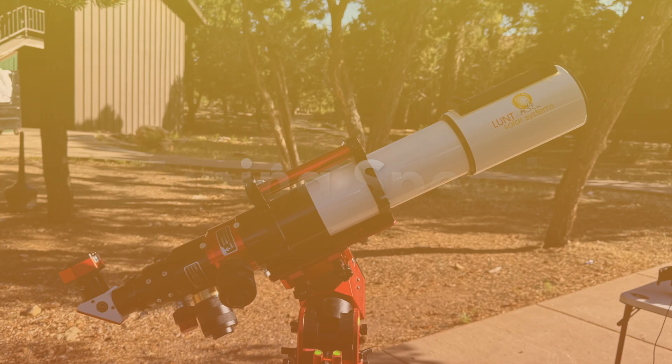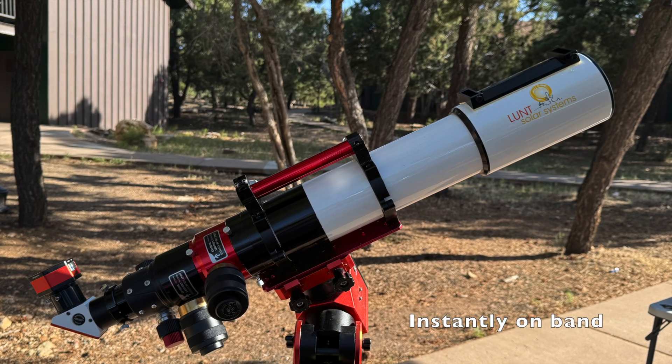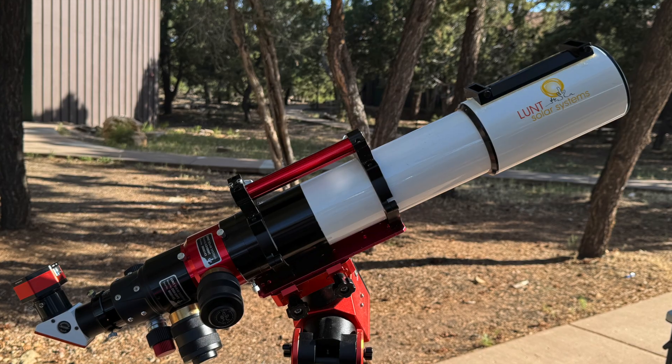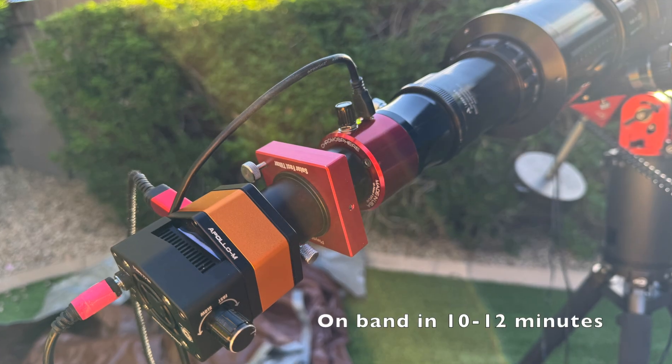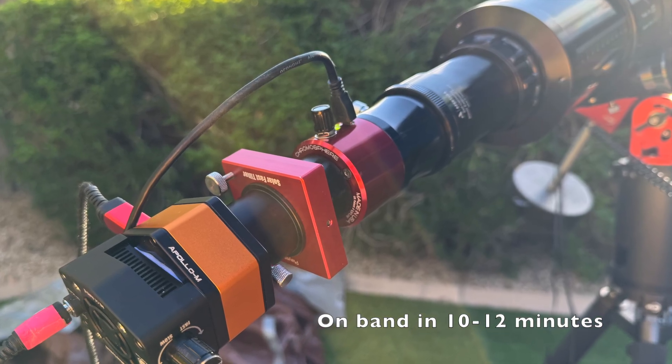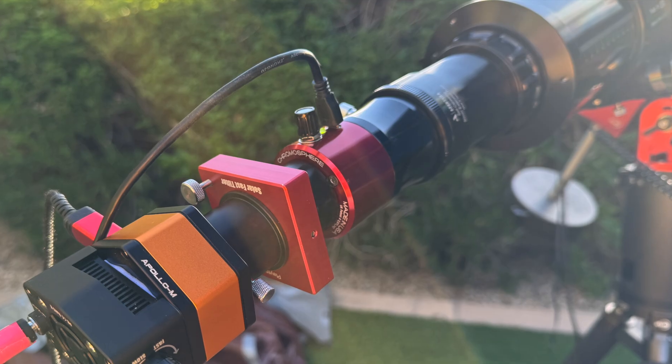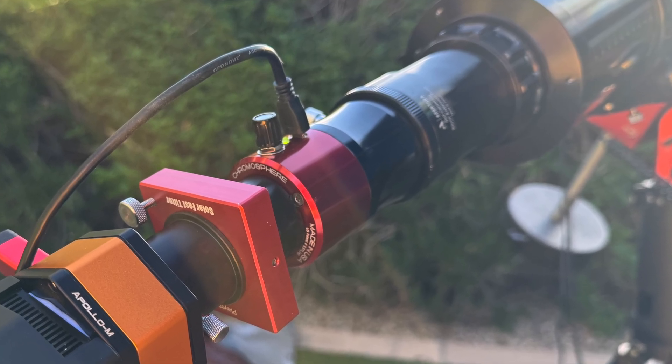Let's now talk about tuning speed. With pressure or tilt etalons, the tuning is instant. With the Solar Spectrum, it takes about one minute. With the Quark, in my example, it takes 10 to 12 minutes to come on band initially and then multiple minutes to settle after any dial change. This matters for prominences, active regions, and mosaic work.